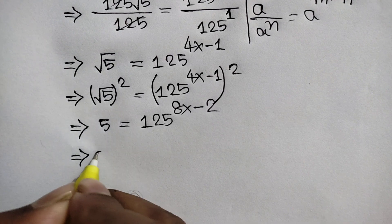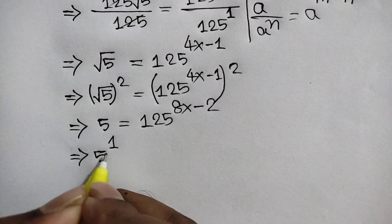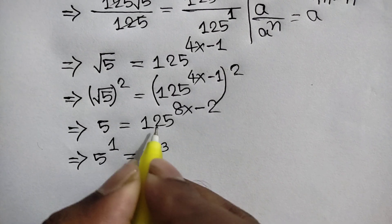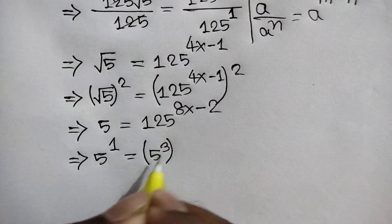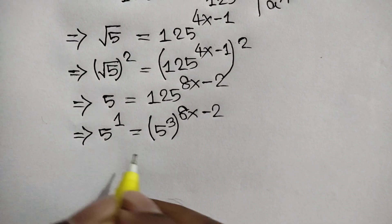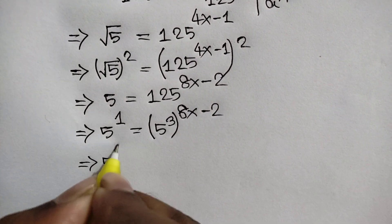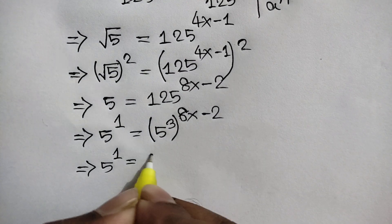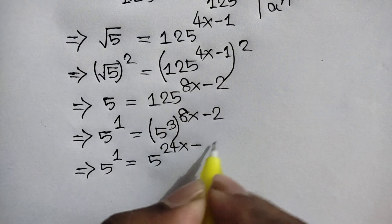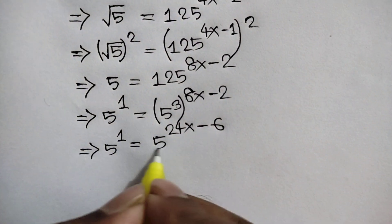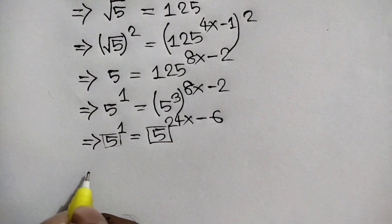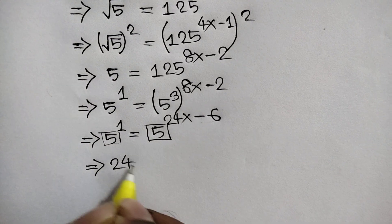Here 5 is the same as 5 to the power 1, and 125 is the same as 5 cubed. So we will write 5 to the power 1 is equal to 5 to the power 3, whole to the power 8x minus 2. This gives 5 to the power 1 is equal to 5 to the power 24x minus 6. Since the bases are the same, the exponents must be equal.